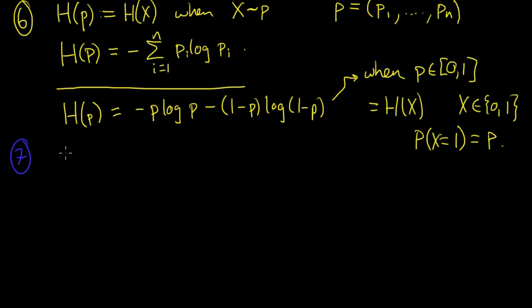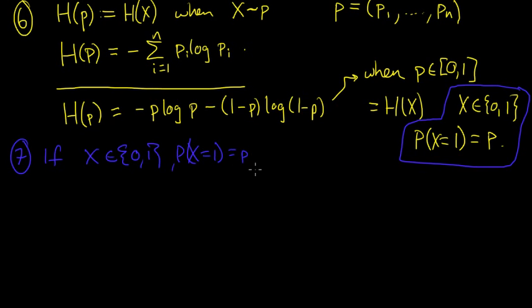So the next remark or property is, in this case, when x is Bernoulli, it's a binary random variable, we have, if x is Bernoulli, p of x equals little p, then this function h of p, h of x, h of x is just equal to h of little p, p being this number, is concave, it's a concave function on its domain, which is just 0 to 1.